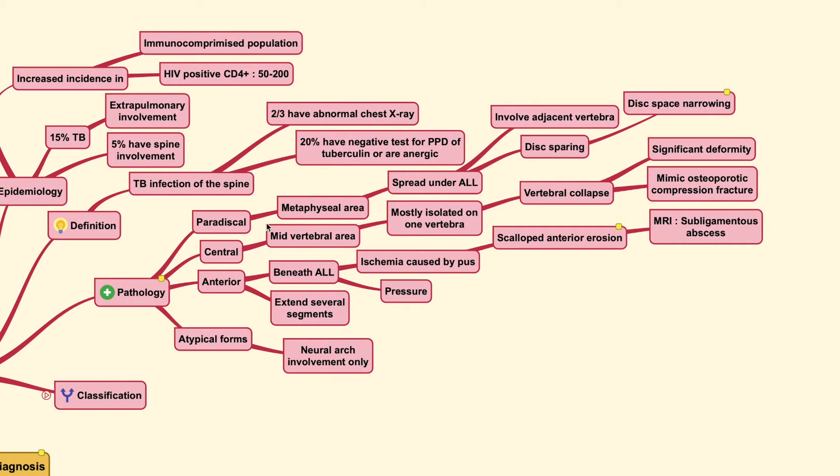Now, these are the most common types. They are divided into four main types known as the paradiscal, central, anterior or atypical forms. The atypical forms typically is involving the neural arch or the posterior element of the vertebral body which is around the lamina, pedicles and so on.